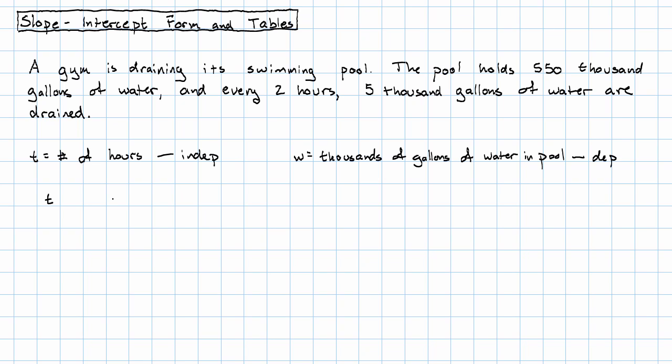We can create a table showing the amount of water in the pool at various times. When no hours have passed, the pool is still full with 550 thousand gallons. And then every time two hours pass, there are five less thousand gallons in the pool.